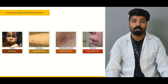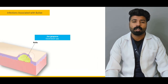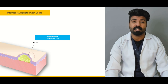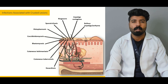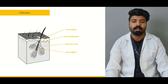Next, we're going to talk about all the infections associated with the formation of vesicles. We're going to talk about infections associated with bulla formation — what a bulla is and in which infections it forms. Next, we're going to talk about infections associated with crusted lesions — what crusted lesions are and how they are associated with different kinds of infections.